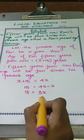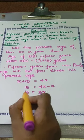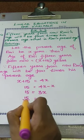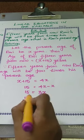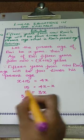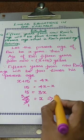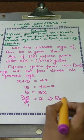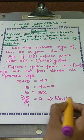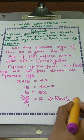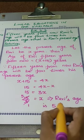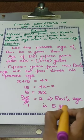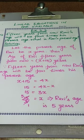We need the x value, so we change the 3 to the RHS. That gives us x equals 15 by 3. Cancel the values: 3 fives are 15, so x equals 5. Ravi's age is 5 years.